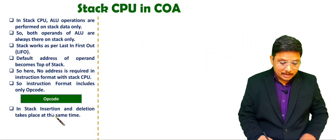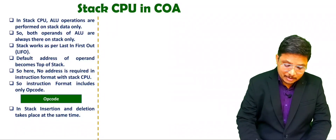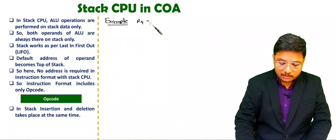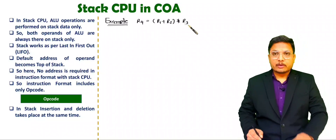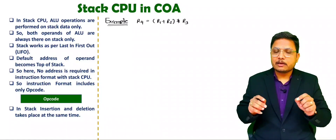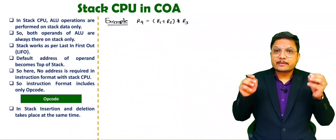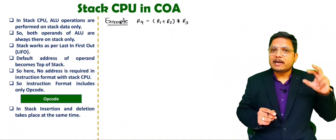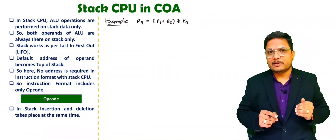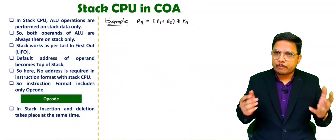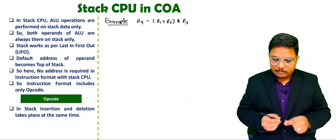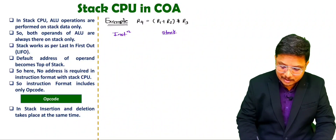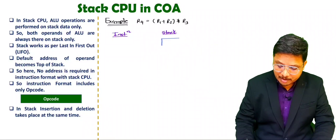To understand this with a practical example, we want to perform R4 = R1 + R2 × R3. In stack CPU, you don't need the address of operands because operands are well-defined and fixed — it works with respect to stack memory, which operates as last-in first-out. By default, operands will be at the top of the stack. So you will not be specifying operands in instruction formats; there will be only an opcode. Initially, let us assume stack memory is empty.